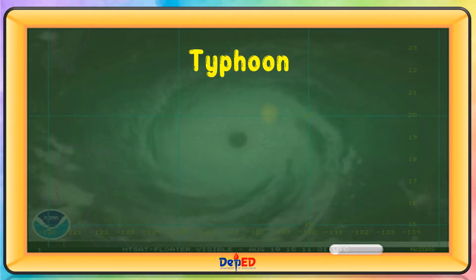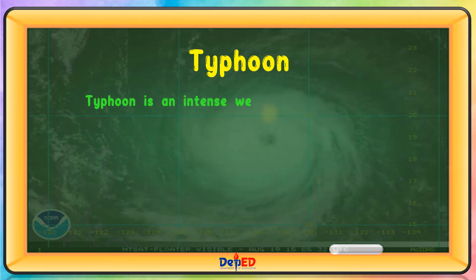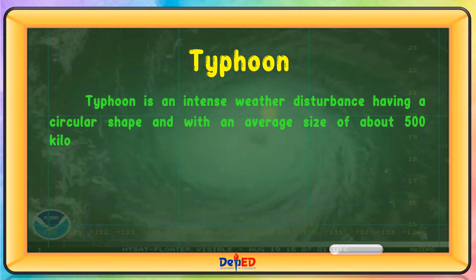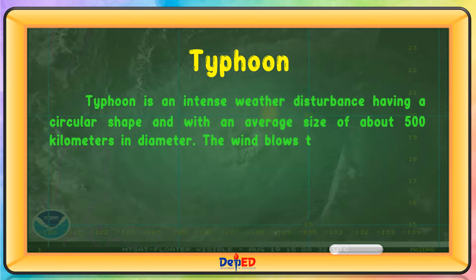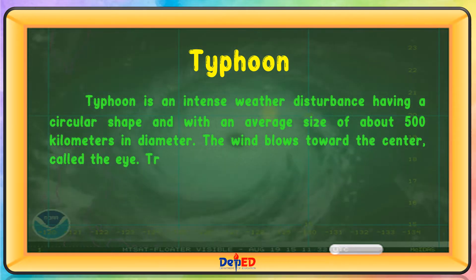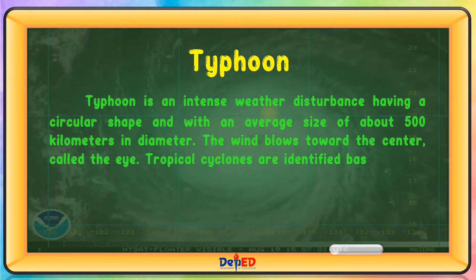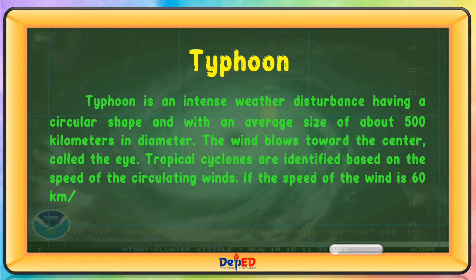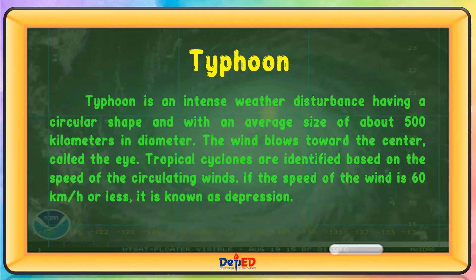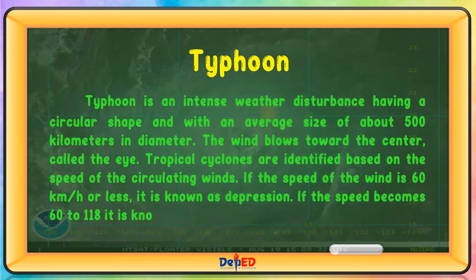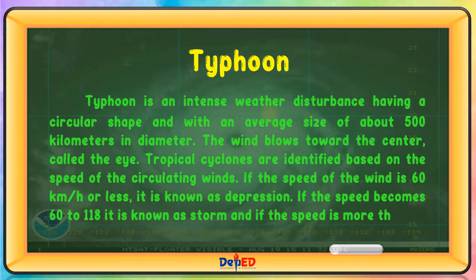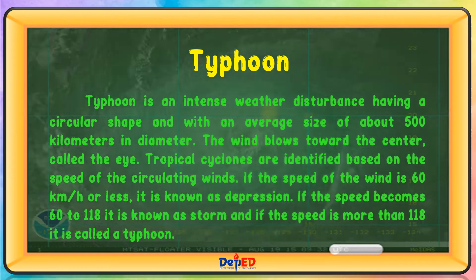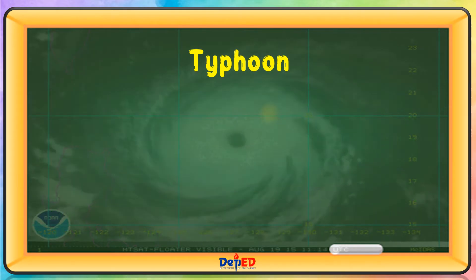Typhoon is an intense weather disturbance having a circular shape and with an average size of about 500 kilometers in diameter. The wind blows toward the center called the eye. Tropical cyclones are identified based on the speed of the circulating winds. If the speed of the wind is 60 kilometers per hour or less, it is known as a depression. If the speed becomes 60 to 118, it is known as a storm, and if the speed is more than 118, it is called a typhoon.